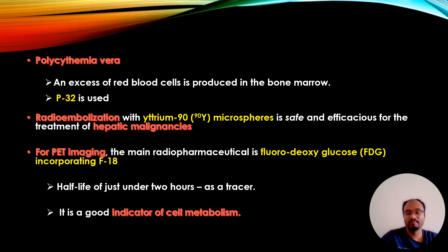Phosphorus-32 is used to detect polycythemia vera, a condition with excess red blood cell production in the bone marrow. Radioembolization with yttrium-90 microspheres is safe and efficacious for the treatment of hepatic malignancies. For PET imaging, the main radiopharmaceutical is fluorodeoxyglucose incorporating fluoride-18, with a half-life of just under two hours. It is used as a tracer and is a good indicator for cell metabolism.